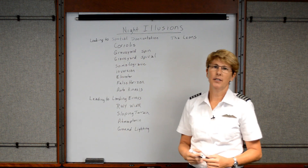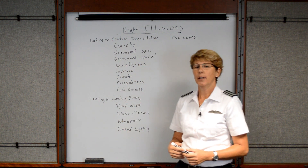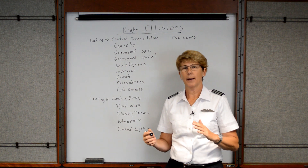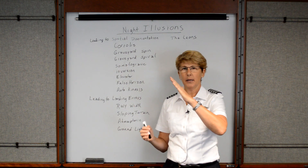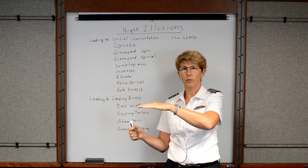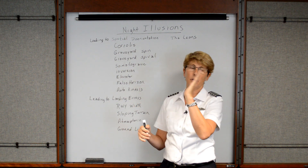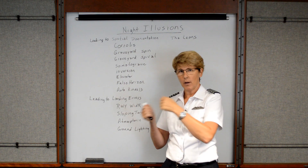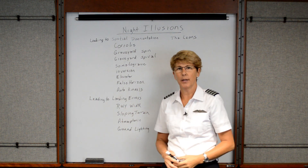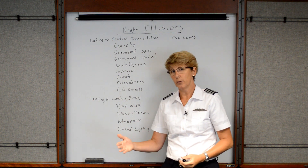Next on our list is the inversion illusion. What happens here is as a pilot is climbing, if they tend to pitch over to level too quickly, it may feel like they're actually pitching over backwards. This causes the pilot to push the nose down, but push it down too severely.